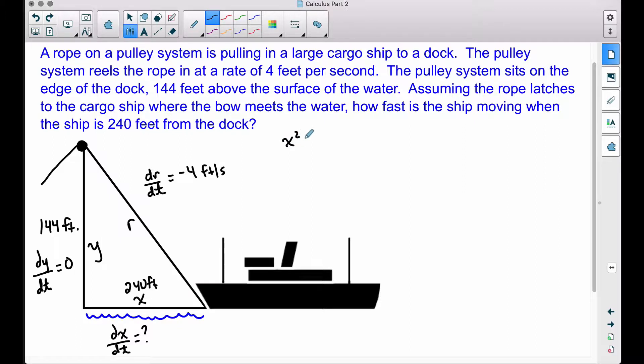We have a right triangle, so therefore X squared plus Y squared is equal to R squared. Let's go ahead and differentiate this, and then we'll talk about how we can plug some of these numbers in and also finding some missing pieces.